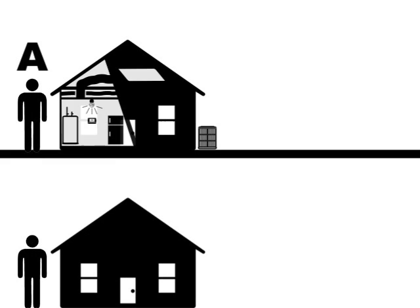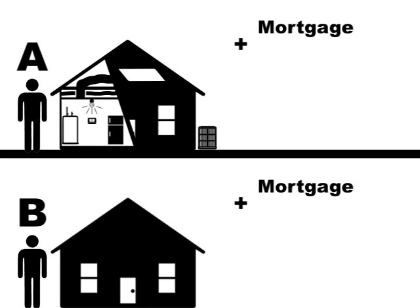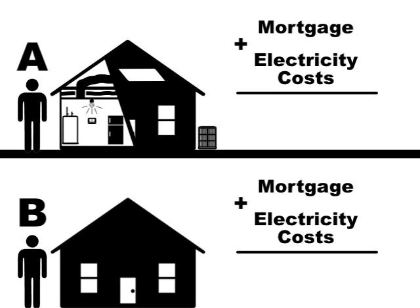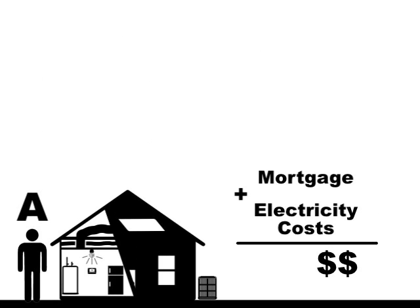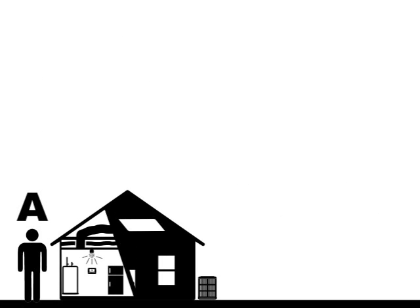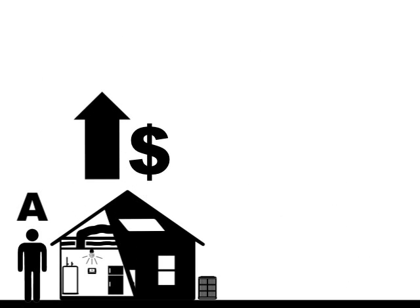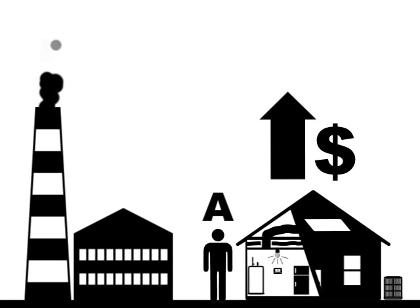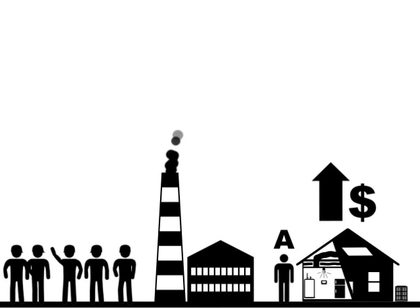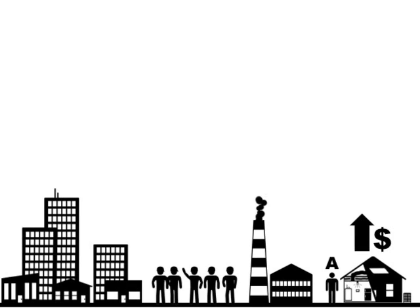For example, homeowner A retrofits his house, while homeowner B chooses to do nothing. If we tally up their mortgage and electricity costs over the next 10 years, we find that homeowner A actually has paid less than homeowner B. Not only has homeowner A spent less money, he has also increased the value of his home, emitted less greenhouse gases, employed local workers, and stimulated the local economy.